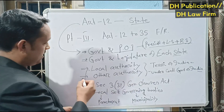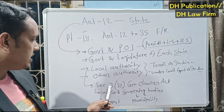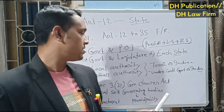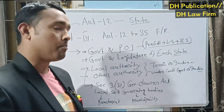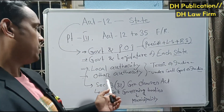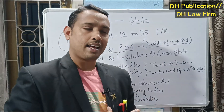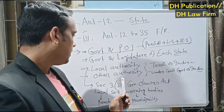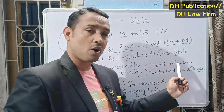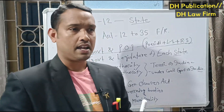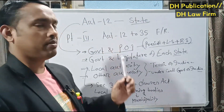Local authority and other authority are also included in the definition of the term 'state.' Local authority is defined under Section 3, sub-clause 31 of the General Clauses Act, and means local self-governing bodies — that is, Panchayats and municipalities. Other authority means any authority within the territory of India or any authority under the absolute control of the government of India. Even organizations situated outside India but under the control of the government of India are included in the term 'state' as per Article 12.